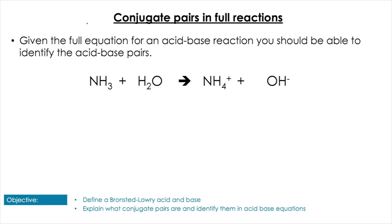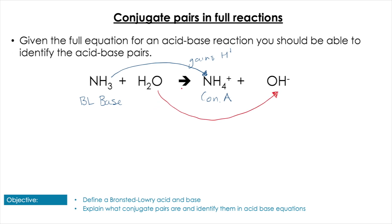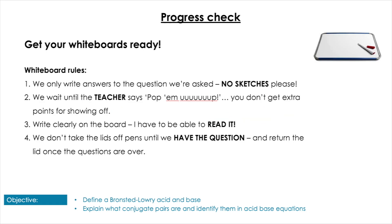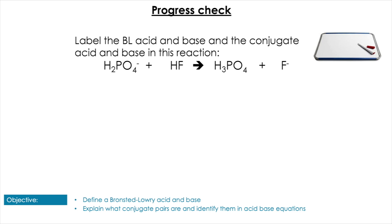We can use these skills in an overall equation. In ammonia reacting with water, ammonia gains a proton going from reactants to products, so it's acting as a Bronsted-Lowry base. Its conjugate acid is the ammonium ion. Water loses a proton, so water is acting as the Bronsted-Lowry acid, and the hydroxide ion is the conjugate base.